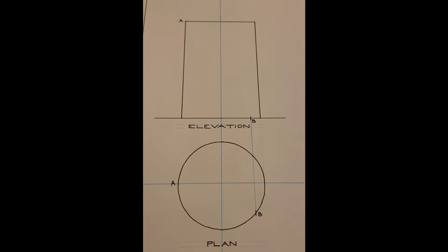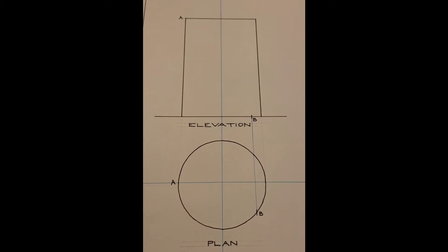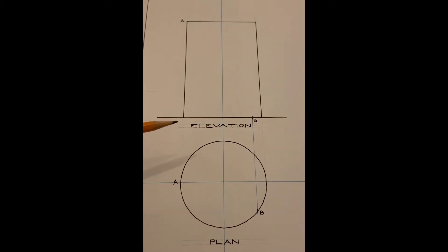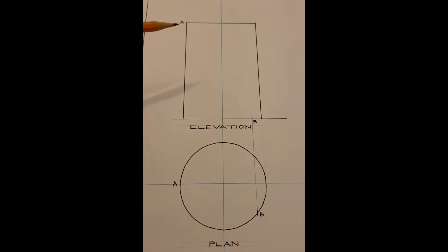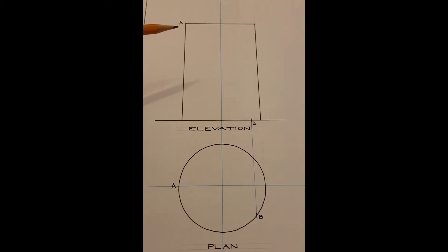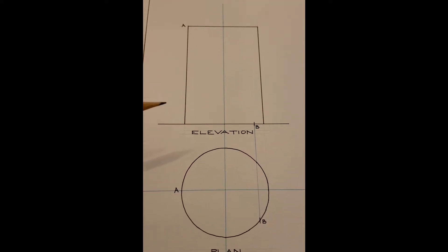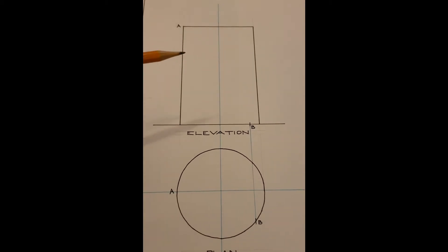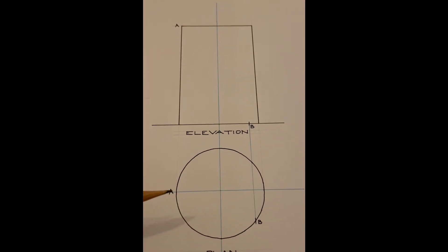So moving on to part two of the question. We have a cylinder and they show the elevation of it and we're told that the diameter of the cylinder is 80 millimeters and it has a height or an altitude of 120 millimeters. So set up the elevation and from there project a plan.